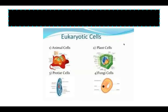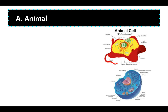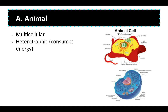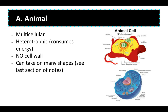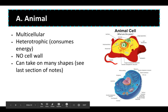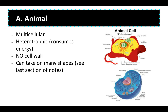Eukaryotic cells fit into four kingdoms: the animal kingdom, the plant kingdom, the fungal kingdom or fungi, and protista. We're going to look at basic characteristics of each briefly. Animal cells: animals are primarily multicellular organisms. They are heterotrophic, which means they cannot produce their own energy — they must consume energy from another source. Animal cells do not have a cell wall at all, and they can take on multiple shapes. Animal cells have lots of different possibilities for their shape.